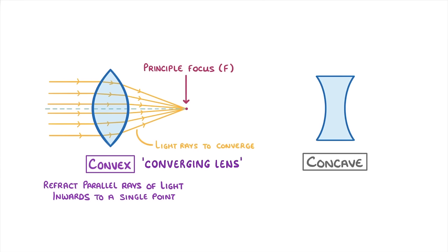Concave lenses on the other hand cave in on either side which causes them to refract parallel rays outwards, so effectively disperse the light.